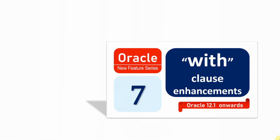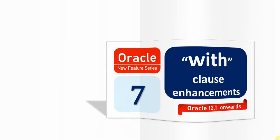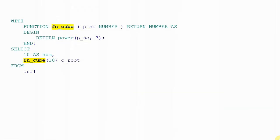Prior to 12.1, as part of the WITH clause, we were only able to use the SELECT statement. However, from 12.1, we are able to write a function or even a procedure as part of the WITH clause, and that function we can directly use in the SELECT statement. A procedure we cannot use directly in the SELECT statement, but we can call it through a function. All these examples are explained clearly in video number 7.